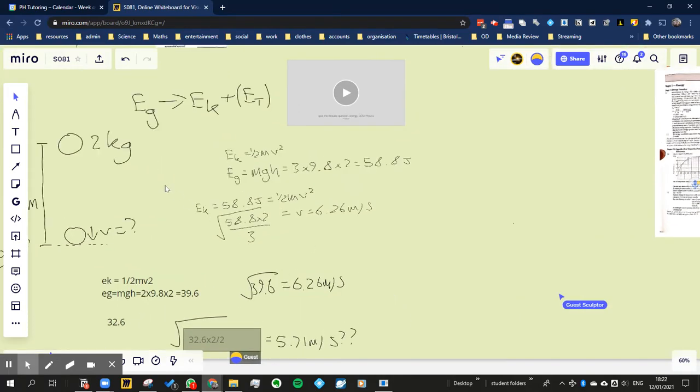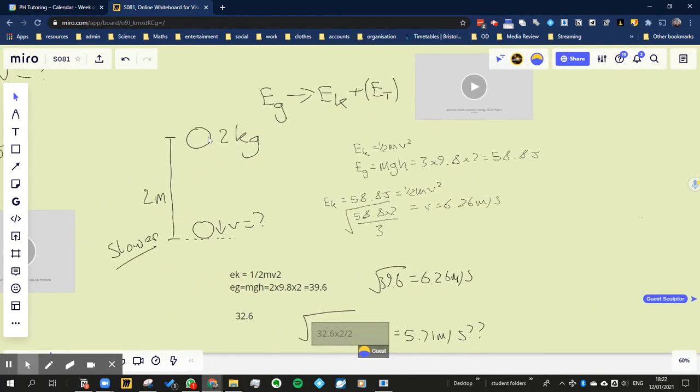We're going to try to understand when you drop an object, we're converting gravitational energy to kinetic energy. We're ignoring the thermal energy, so we're trying to see that if we knew the height that something was dropped by, and we knew the mass, what would be the final velocity?